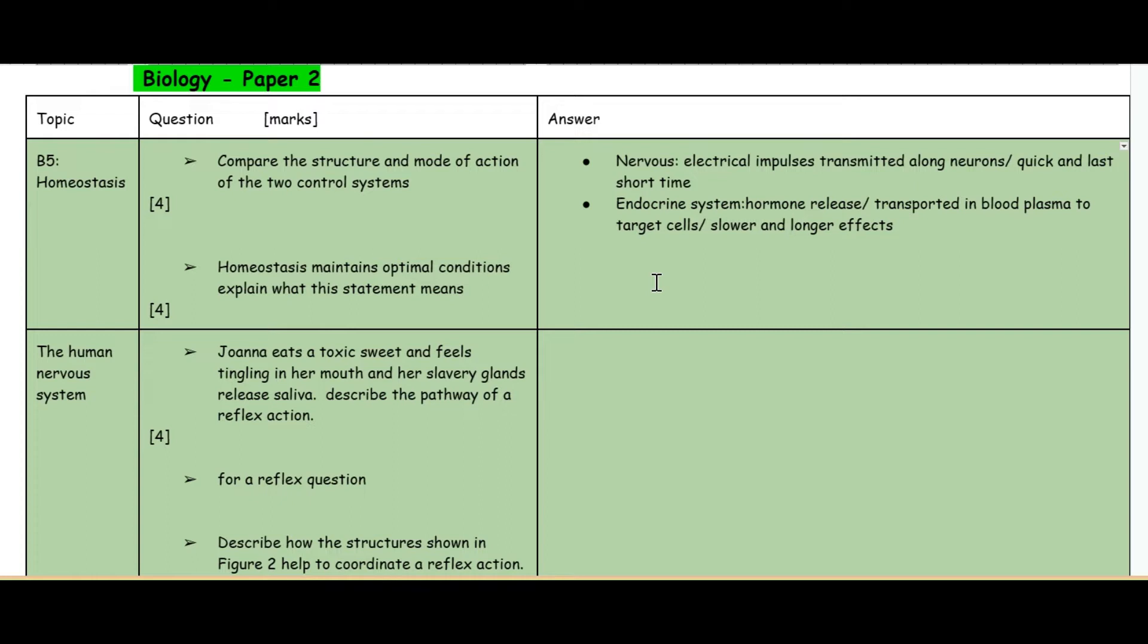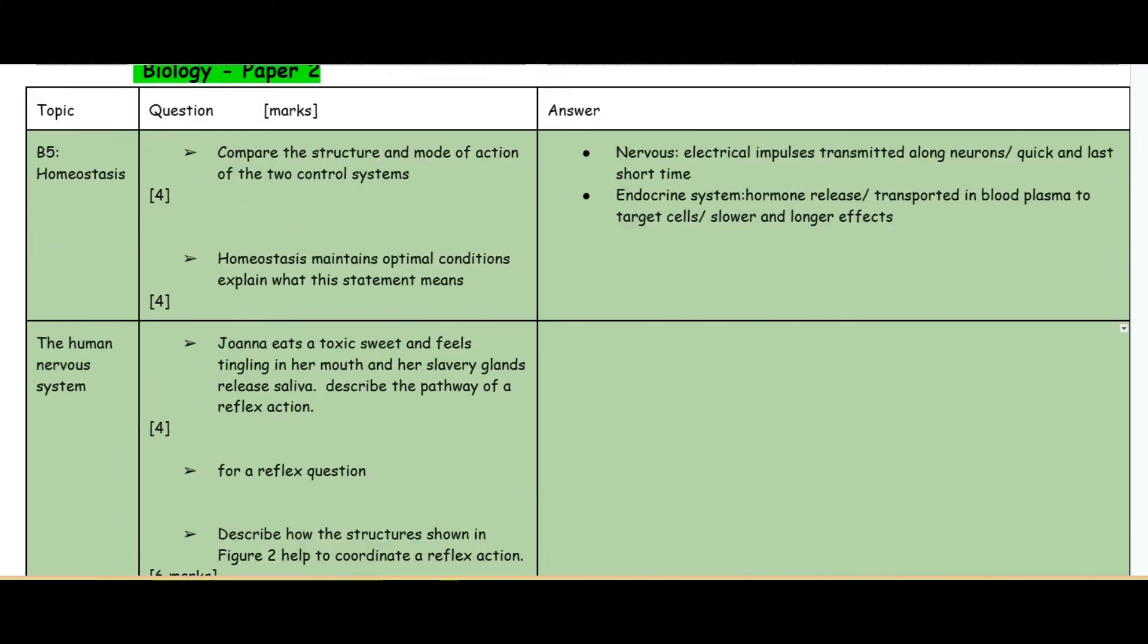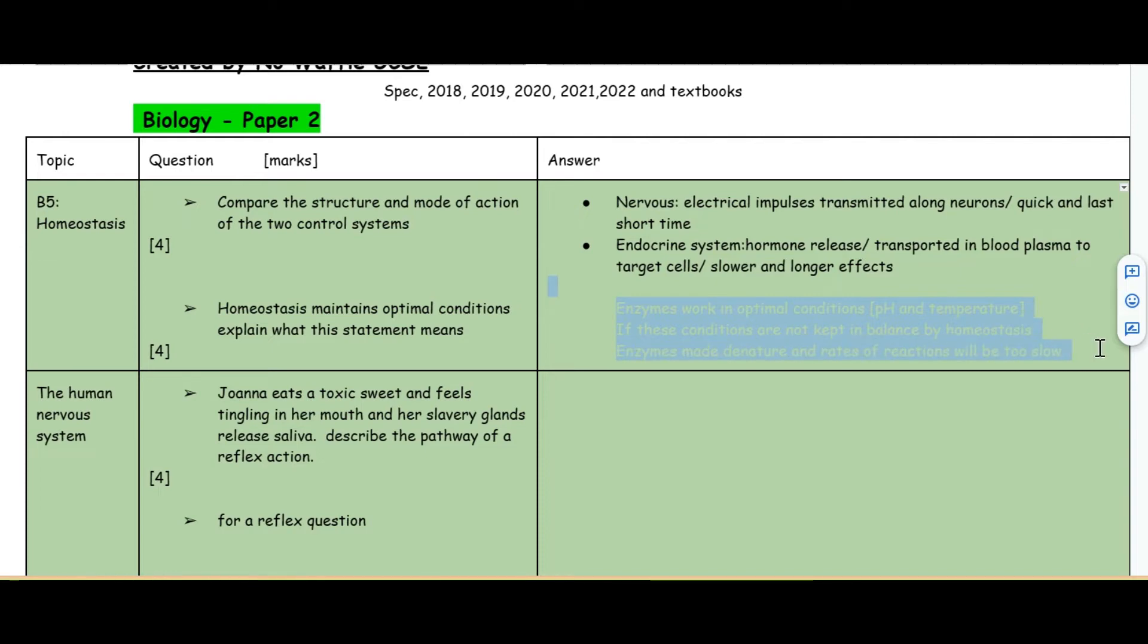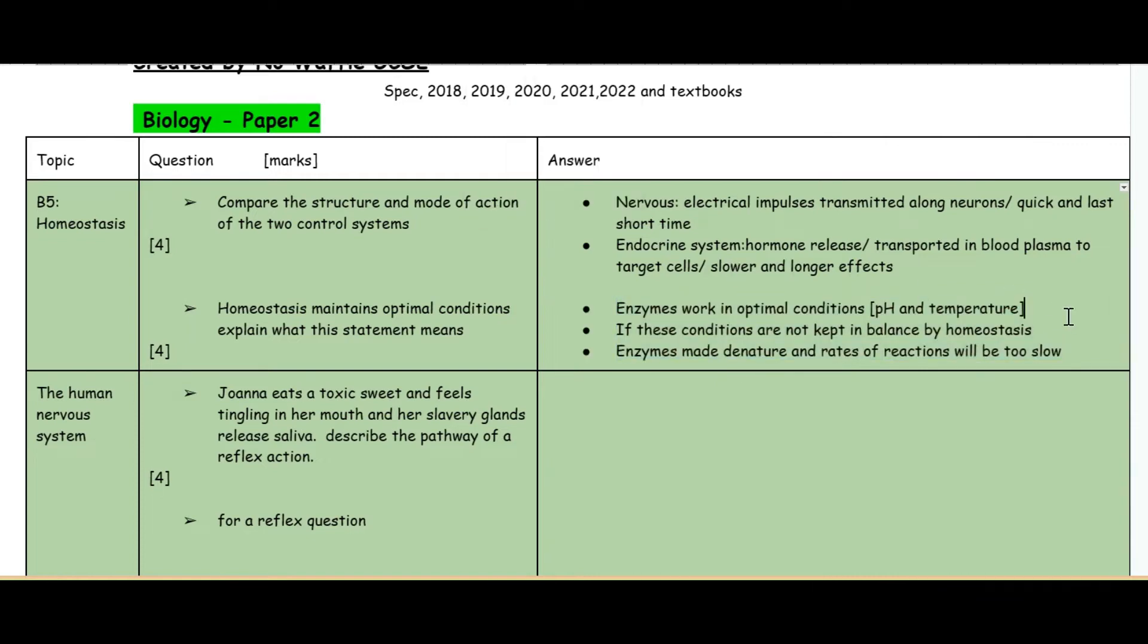The second question: homeostasis maintains optimal conditions. Explain what this statement means. What this statement means is that enzymes all work in optimal conditions in terms of pH and temperature. If these conditions are not kept in balance by homeostasis, then the enzymes may denature and the rates of the reaction will be too slow.